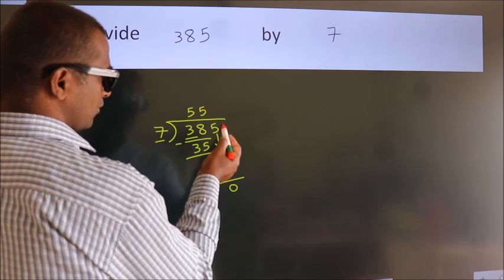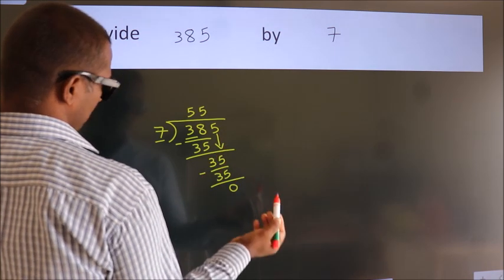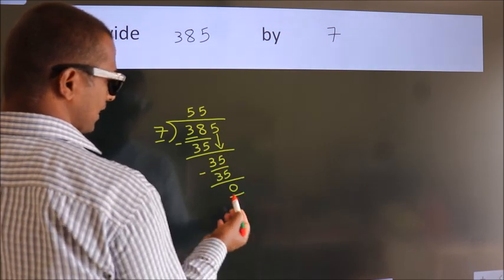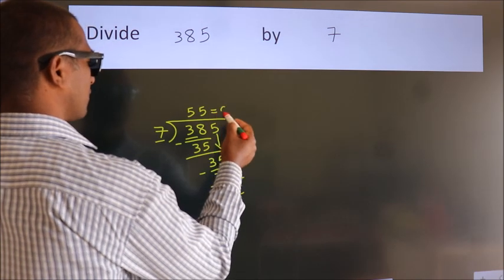After this, no more numbers to bring it down. And we got remainder 0. So, this is our quotient.